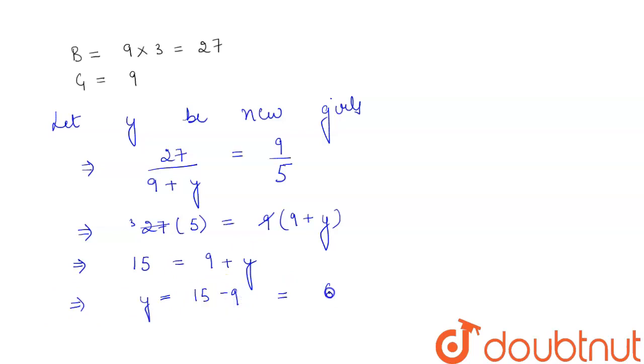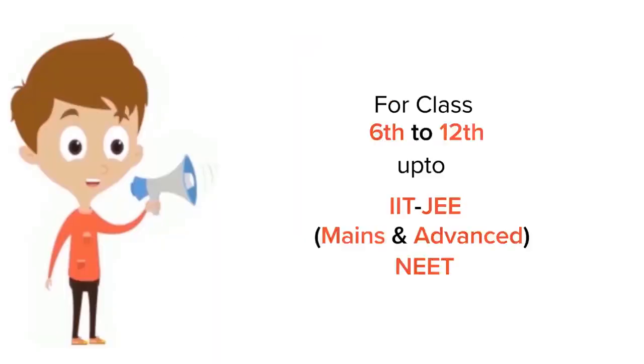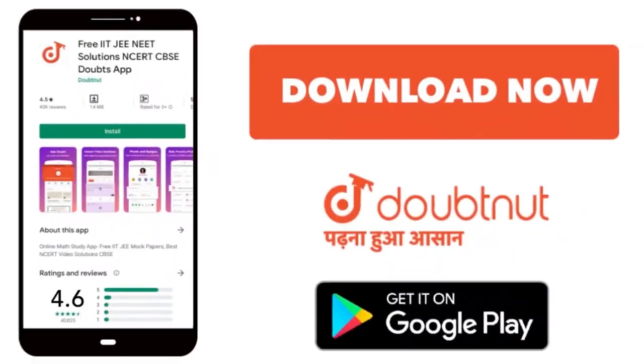So the new girls to be added will be equal to 6, and this is our required answer. For class 6 to 12, IIT-JEE, and NEET level, trusted by more than 5 crore students. Download Doubtnut today.